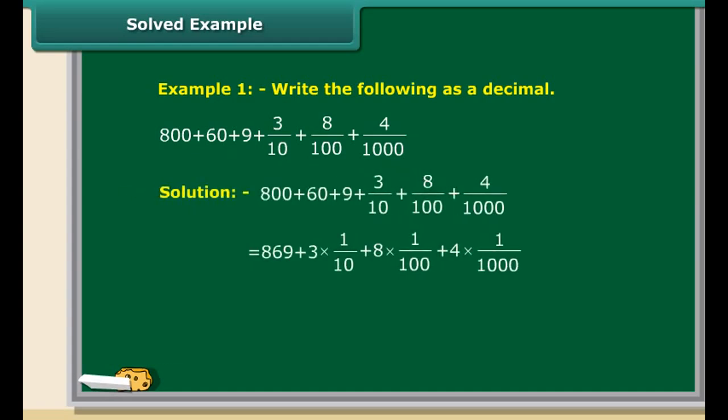Write 800 + 60 + 9 + 3/10 + 8/100 + 4/1000 as a decimal. 800 + 60 + 9 is 869. 3/10 + 8/100 + 4/1000 is 0.3 + 0.08 + 0.004, which adds up to 0.384. So the answer is 869.384.